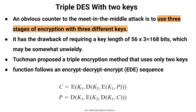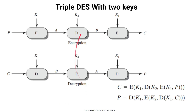In the EDE process with 2 keys: the plaintext is encrypted using key K1, producing intermediate value A. Then A is decrypted using key K2, producing value B. Then B is encrypted using key K1 again, resulting in the final ciphertext. This is the encryption process for Triple DES with 2 keys.